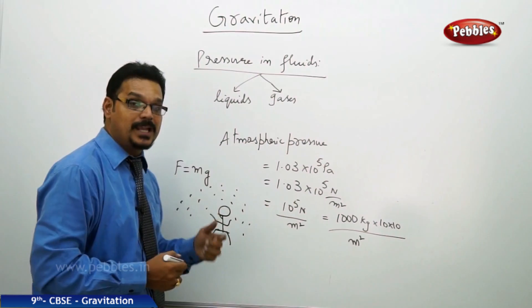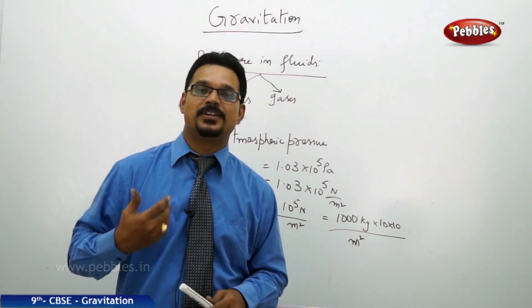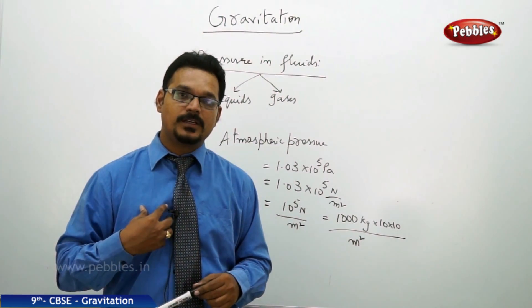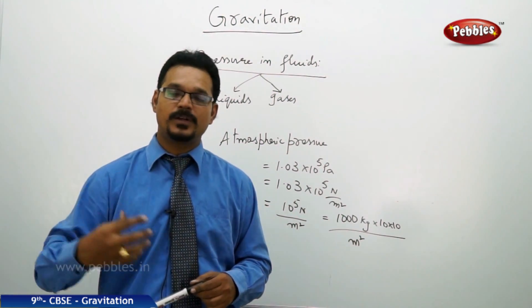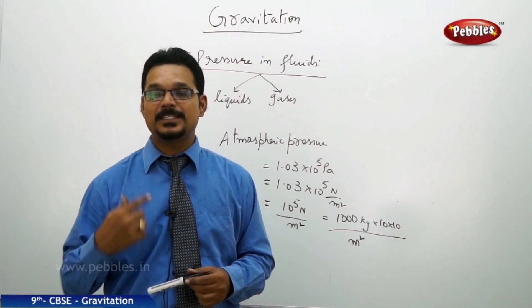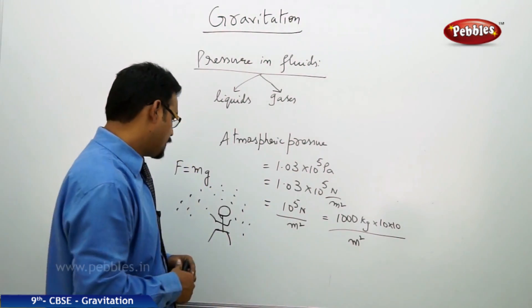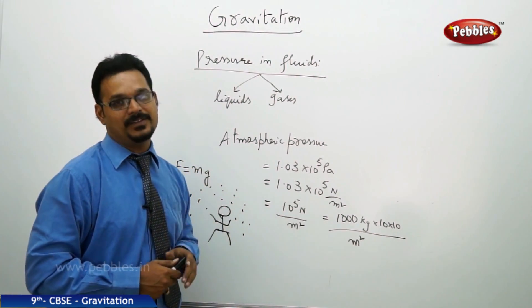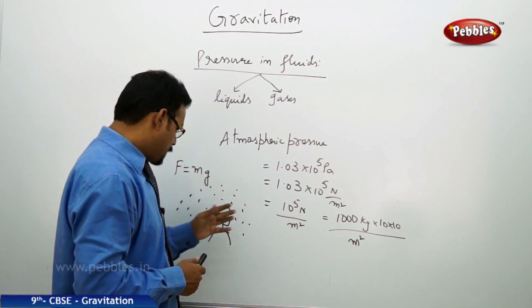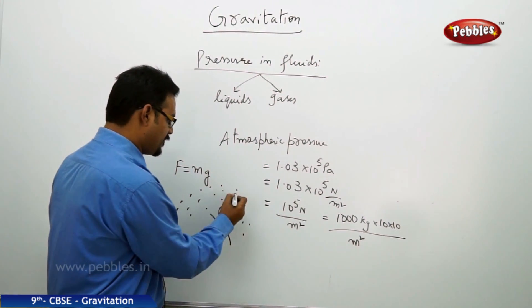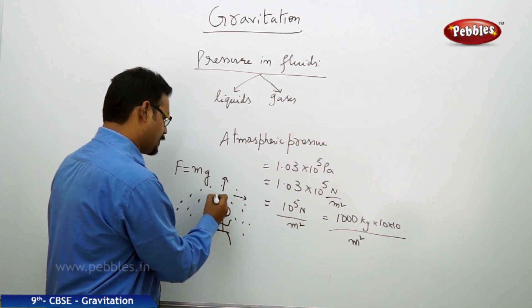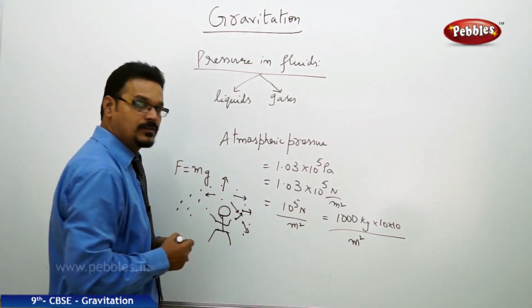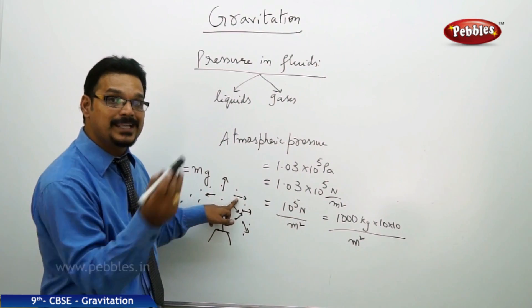But actually what's happening? The atmospheric pressure by the atmosphere is balanced by our blood pressure. So blood pressure has some pressure - some force per unit area - so that is balancing the atmospheric pressure. One reason. Another reason: atmospheric pressure, if you see the atmosphere particles in different directions.